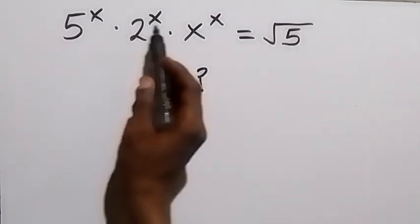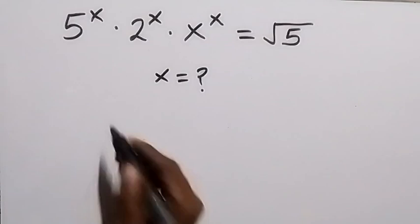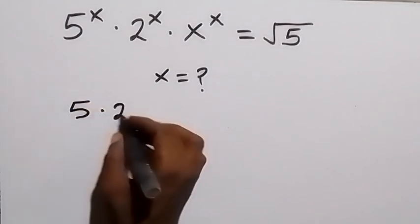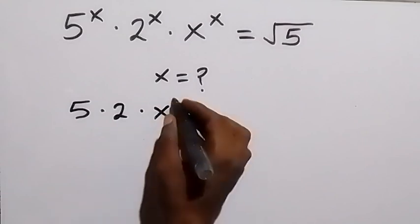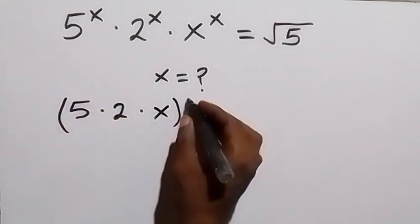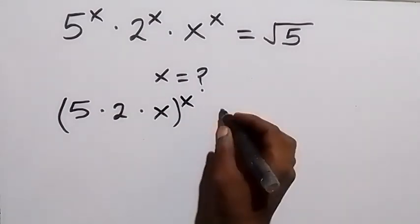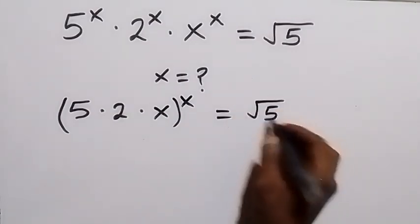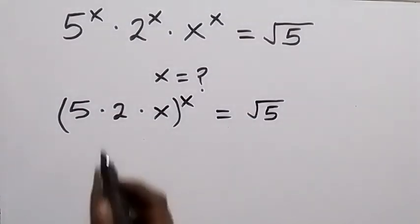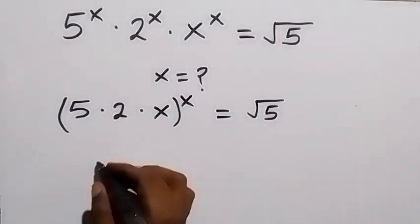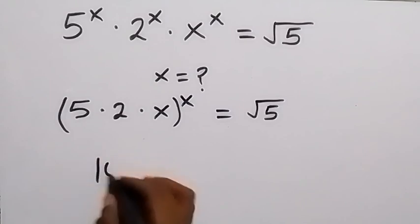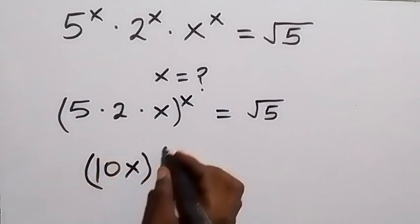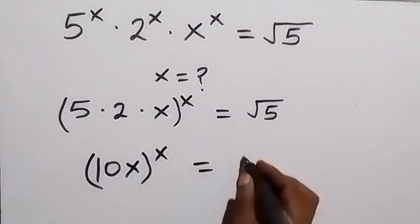From here we have the same power, so we can bring the power out and write this as 5 times 2 times x, all raised to power x. From the law of indices, this equals root 5. So 5 times 2 is 10, times x gives us 10x, raised to power x, equals root 5.